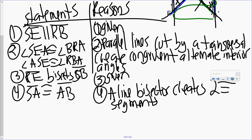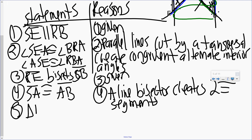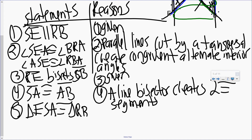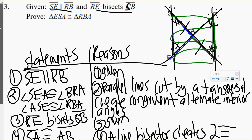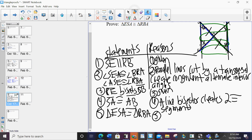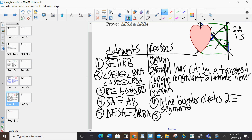And now I have three pairs of things congruent. So I can state that triangle ESA is congruent to triangle RBA. Just look at one of the triangles. I'll block one of them out. Let's just look at the one on the right. I see two angles and one side. The side that's marked is not the side that's between the two angles — so the S is not in between the two A's. And it's AAS.